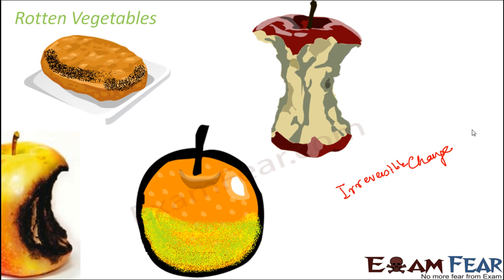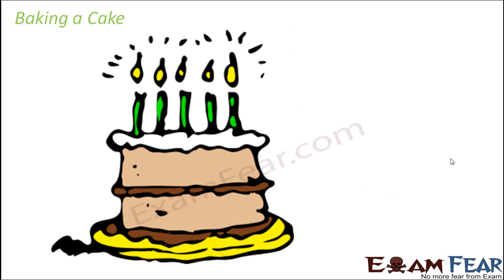What kind of change is this — reversible or irreversible? Definitely irreversible, because the rotten apple is never going to become a good apple again. It rots because of the action of microorganisms like bacteria, fungi, etc., and their action spoils the food. A lot of chemical reactions take place during the process of spoiling, so once it becomes rotten it is irreversible, because the chemical composition of that fruit or vegetable has already changed.